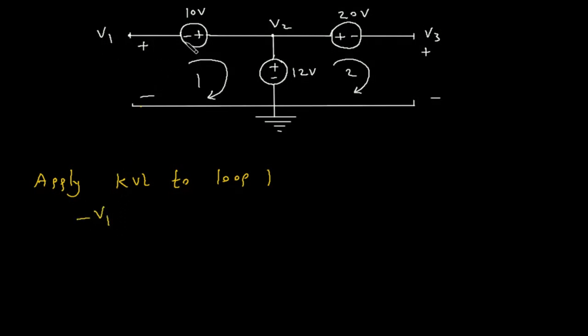Minus V1, minus 10, plus 12 is equal to 0. So, from this minus V1 plus 2 is equal to 0. Therefore, V1 is equal to 2V.